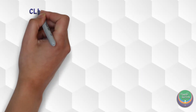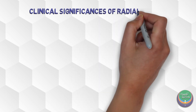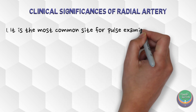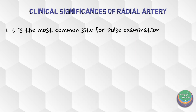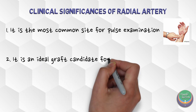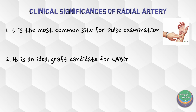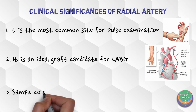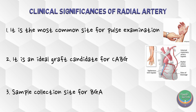Let's now look at the clinical significances. The radial artery is the most common site for pulse examination — the distal end runs against the hard surface of the bone, and being covered by just fascia and skin contributes to easy pulse reading. The radial artery is also an ideal graft candidate for coronary artery bypass procedures due to its diameter, length, and ease of harvesting. Blood samples are collected from the radial artery for blood gas analysis, or BGA test, due to its easy access.